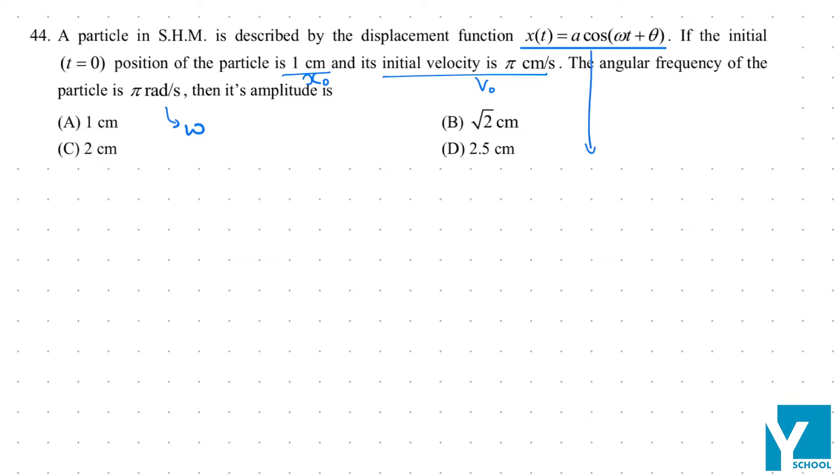If I write this function for x0, what will happen? You will have a cos θ. We know x0, so you will find a cos θ value which is 1 upon a.